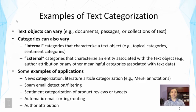Another application is automatic email routing or sorting — automatically sorting emails into different folders, where each folder is a category. There is also routing emails to the right person to handle them. In a helpdesk, an email is generally routed to a particular person, as different people handle different kinds of requests. You can build an automatic text categorization system to route requests, classifying incoming messages into a category that corresponds to the person who should handle them.